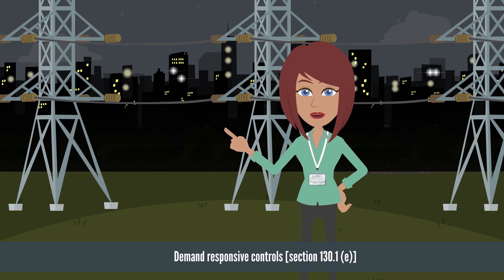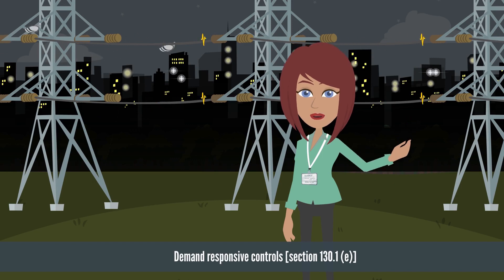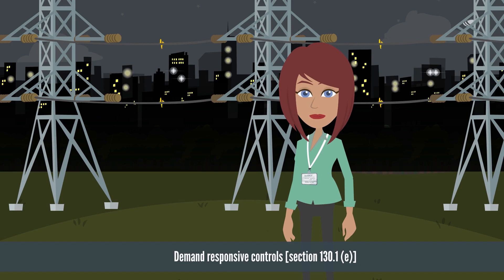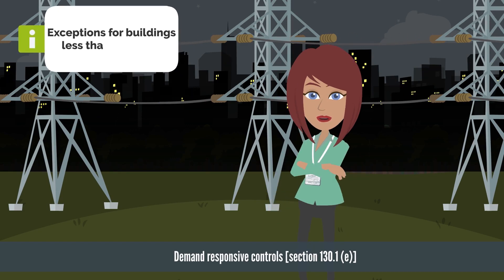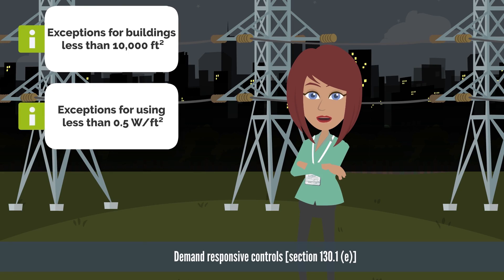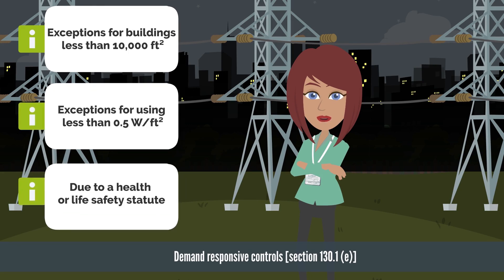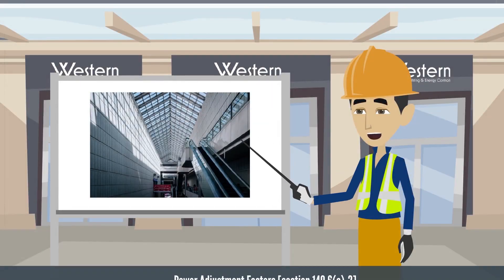Or if the total lighting power in the first daylighting row is less than 120 watts. The demand-responsive control's intent is to keep the energy demand lower than supply. Therefore, there is a new requirement to support OpenADR 2.0a or 2.0b. There are exceptions for buildings less than 10,000 square feet, spaces using less than 0.0 watts per square foot, and lighting not permitted to be reduced due to a health or life safety statute.